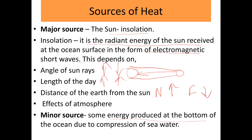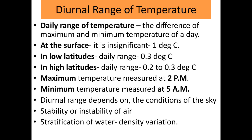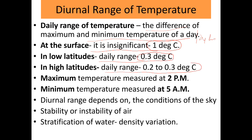The diurnal range of temperature is the difference between the maximum and minimum temperature of a day, measured over 24 hours. At the surface it is very insignificant — just about one degree Celsius. In lower latitudes the daily range is around 0.3 degrees Celsius, and in higher latitudes it is between 0.2 to 0.3 degrees Celsius. Maximum temperature is measured at 2 pm and minimum temperature is measured at 5 am.